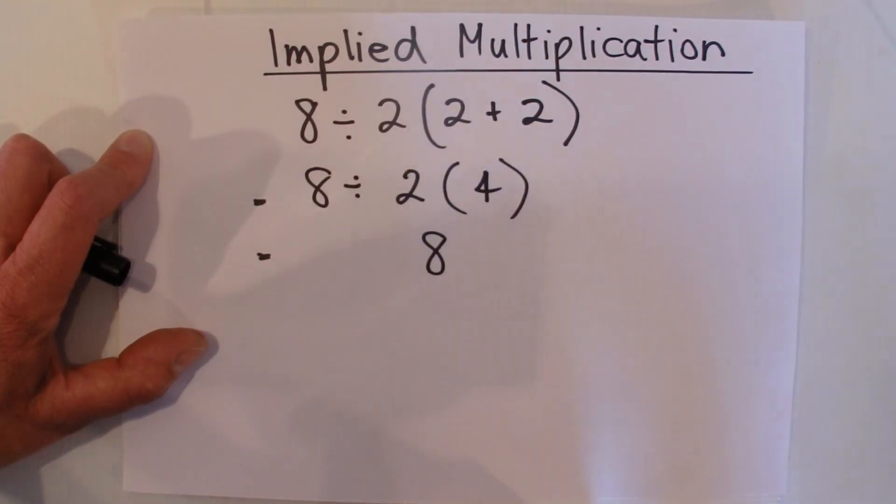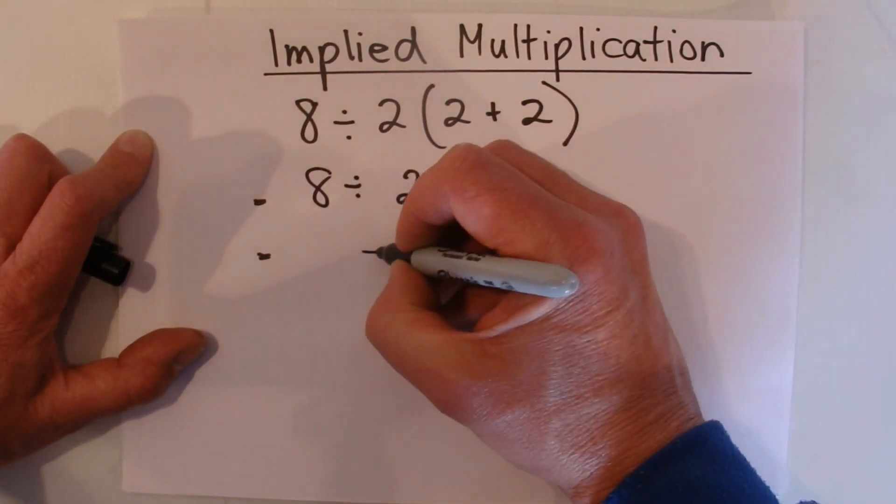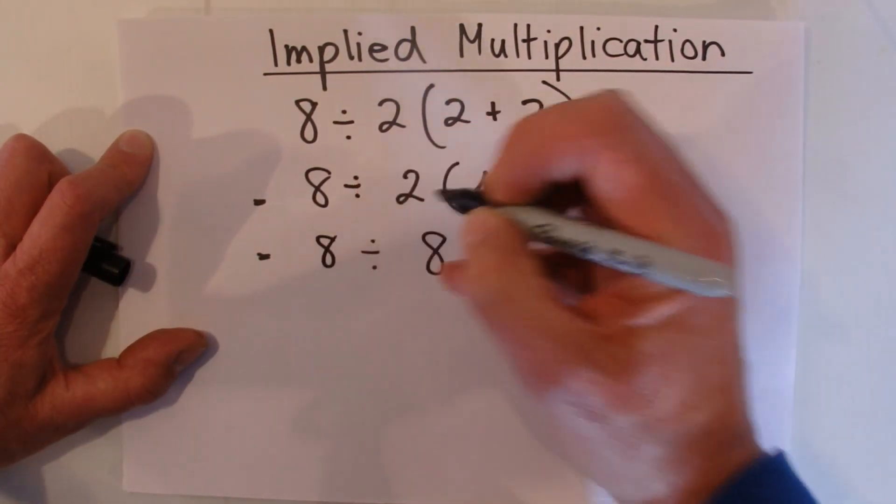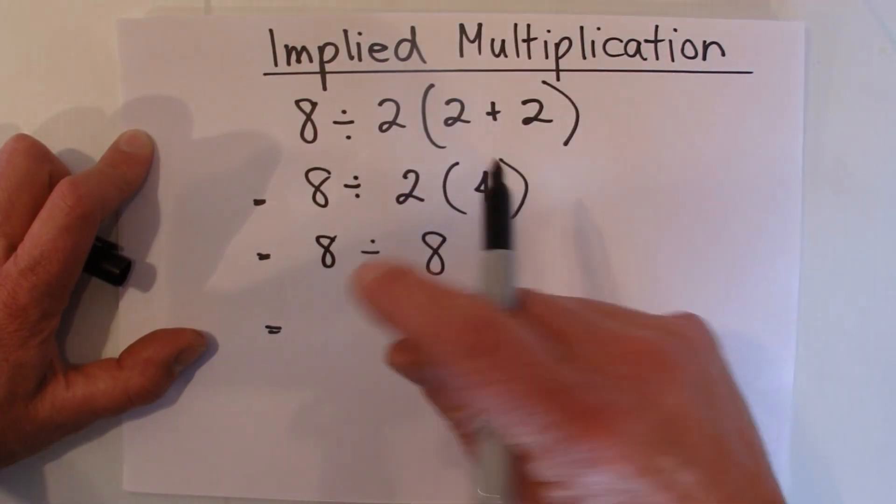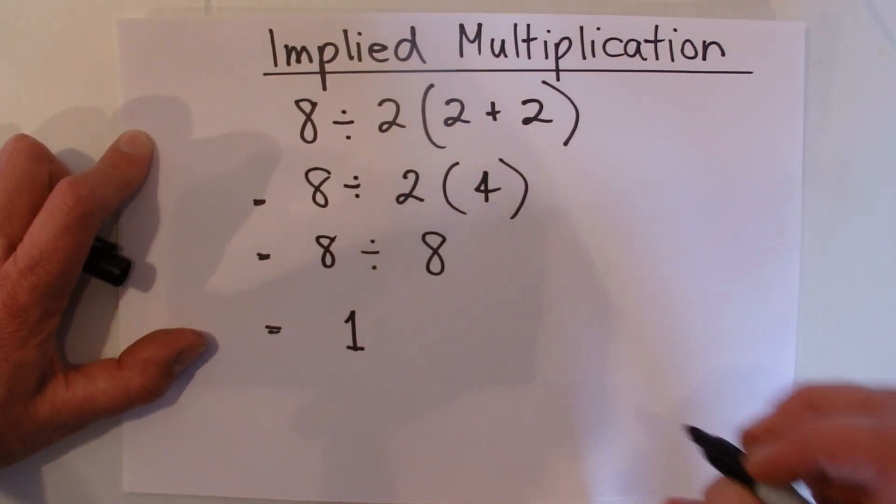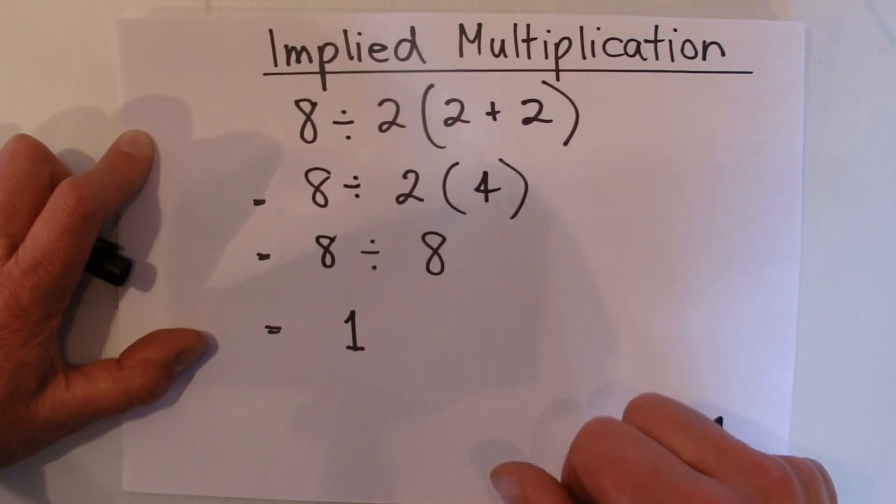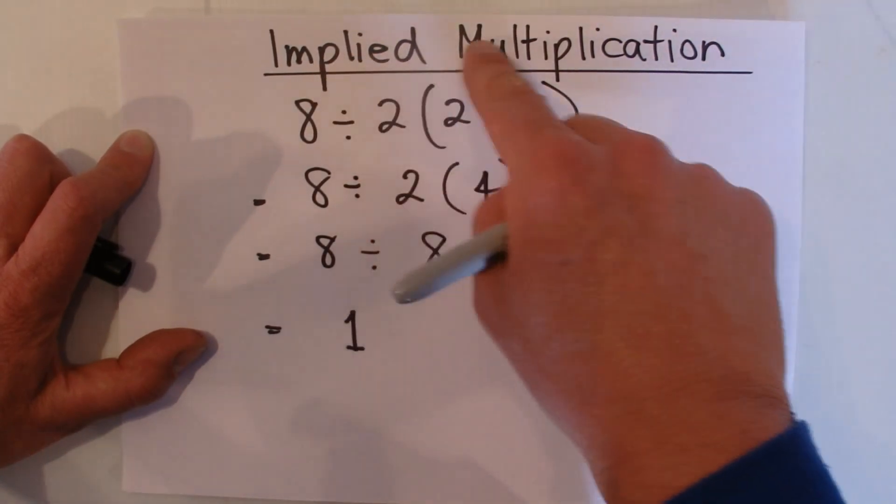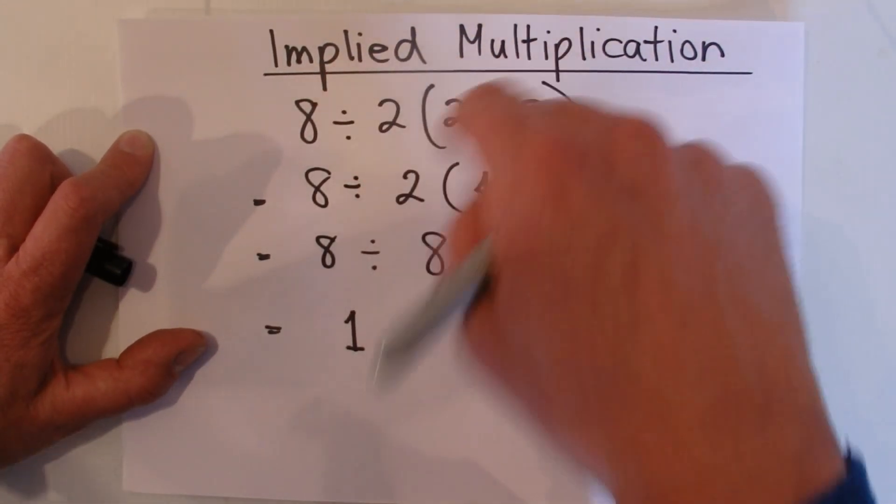the 4, which gives you 8. So you do that part before the division, and then you're left with 8 divided by 8, which equals 1.